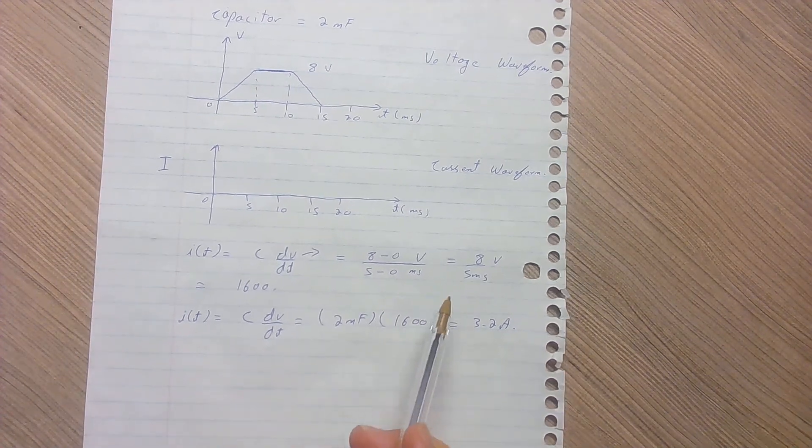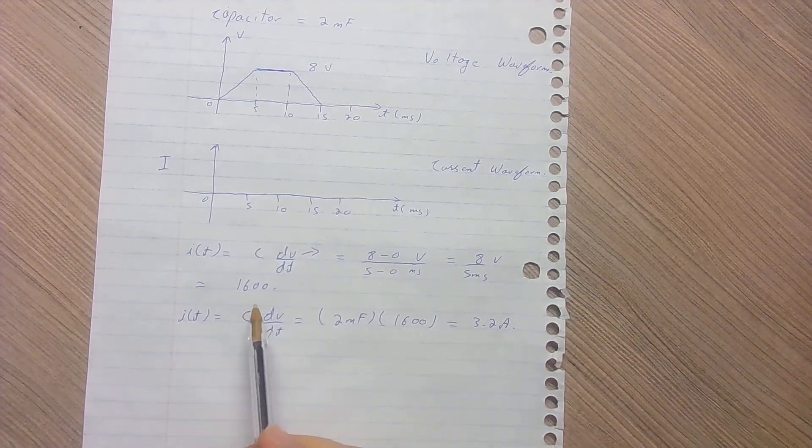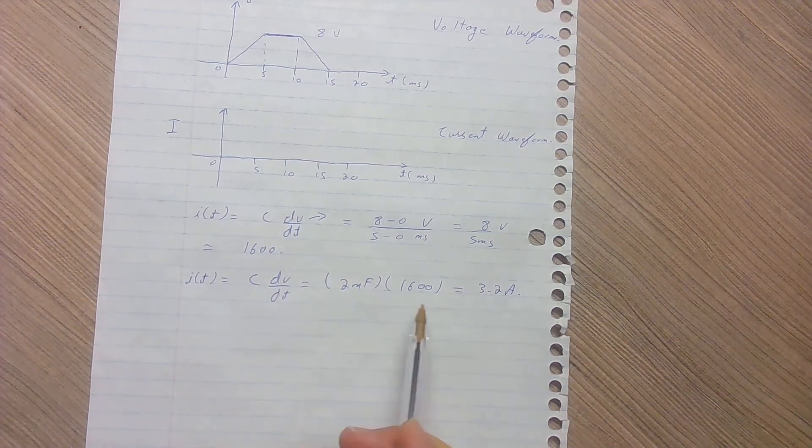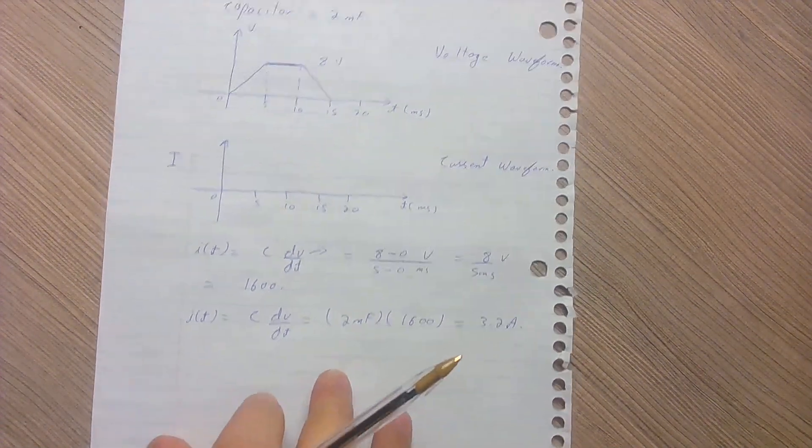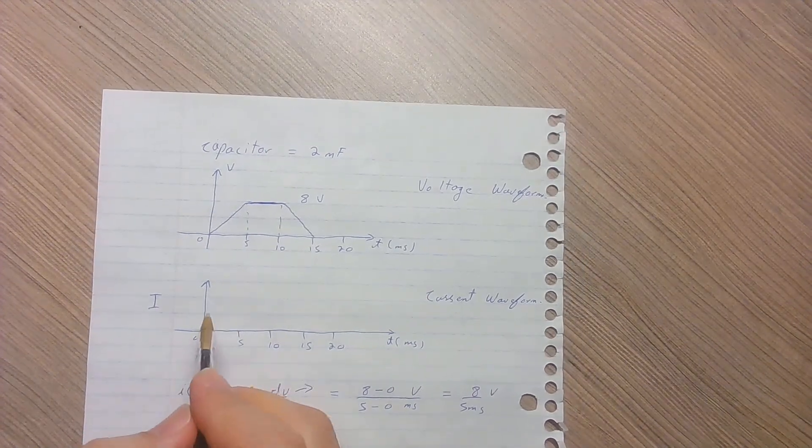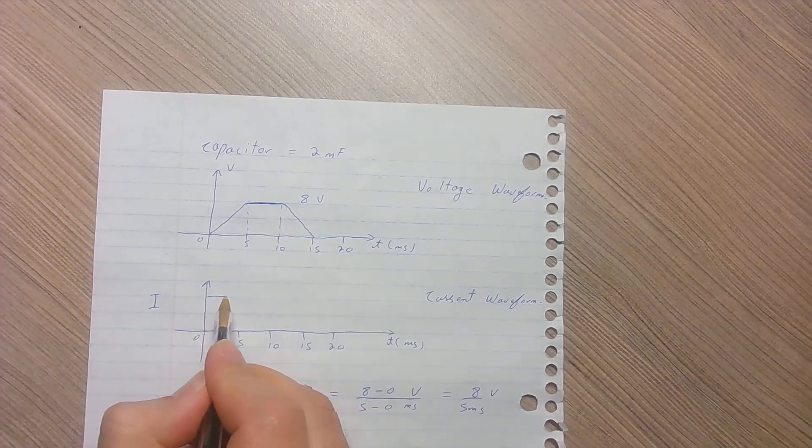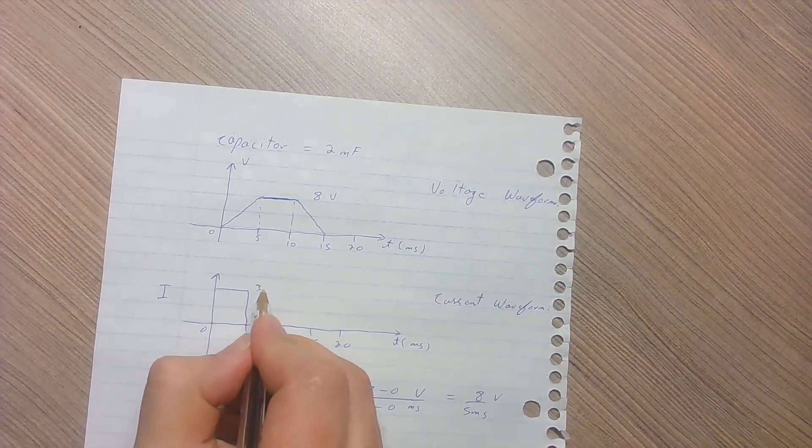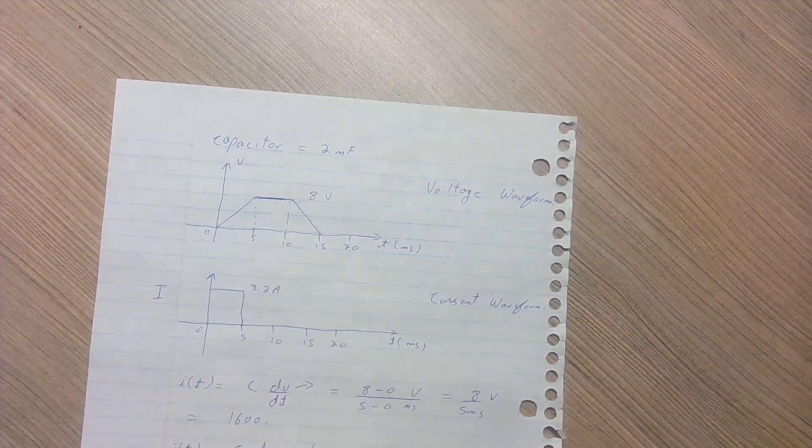So calculating the values, we get the rate of change as 1600. Multiplying that by the size of the capacitor, we get the magnitude for the current. So for the first 5 milliseconds, the current has a magnitude of 3.2 amperes.